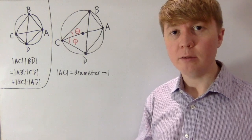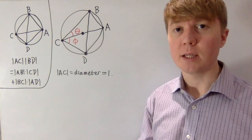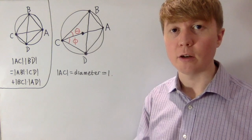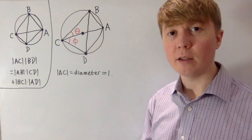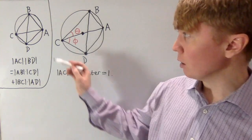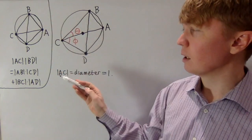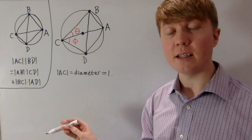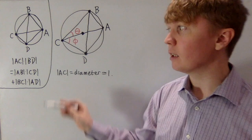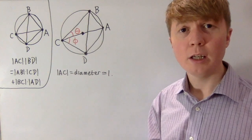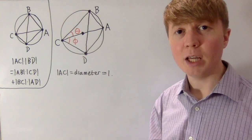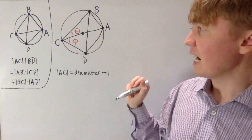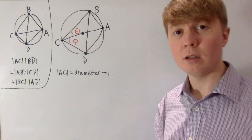We're going to see how the angle sum and difference formulae for sine can arise naturally as a consequence of Ptolemy's theorem. Ptolemy's theorem tells you that if you've got a cyclic quadrilateral ABCD, then the side lengths and the lengths of the diagonals AC and BD satisfy a certain equation. With the correct geometric setup, we can show that the angle sum formula for sine holds.